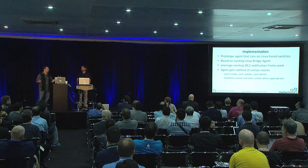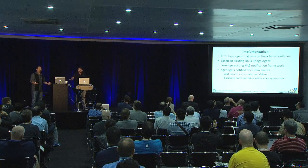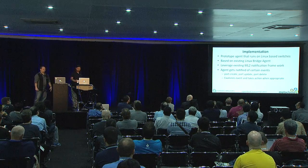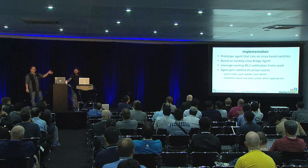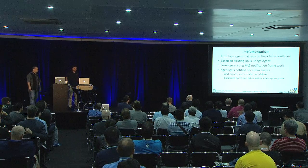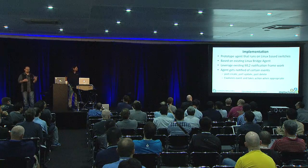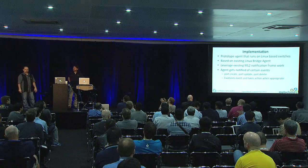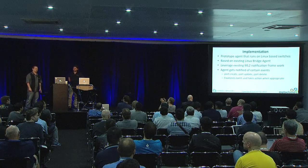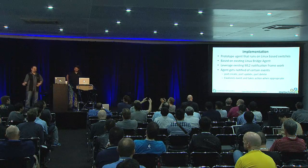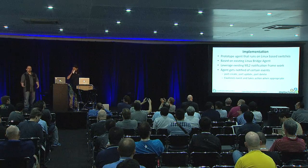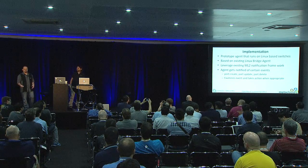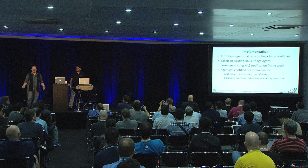So how do we do this? We have a prototype agent that we've written that will run on any flavor of Linux, and it happens to be optimized to run on Linux distributions designed to run on switches, like the Quanta one here. This agent is based upon the existing Linux bridge agent, so we had a great reference to use. We had to make a few changes because there are obviously differences between a switch and a traditional hypervisor — we don't have tap devices on our switches. So all the management of tap devices was no longer necessary, but we do have the basic ports and VLANs, and we want to build bridges to span them.